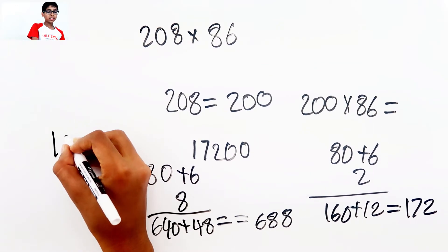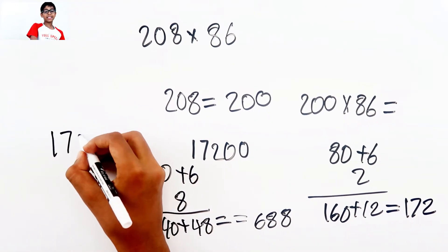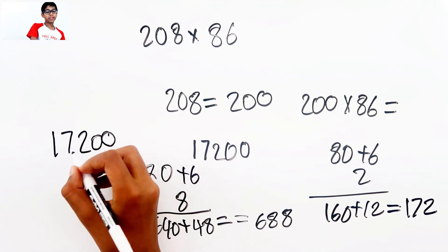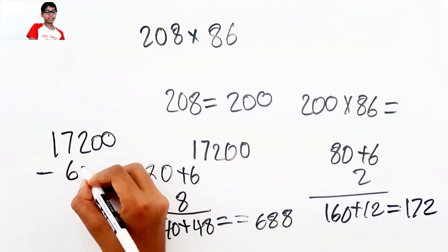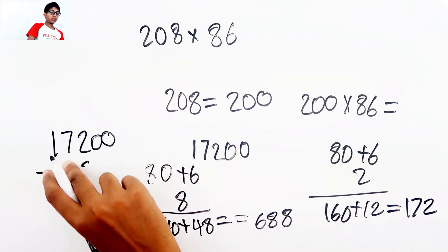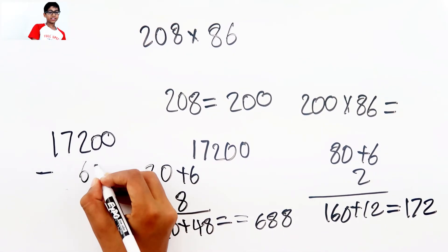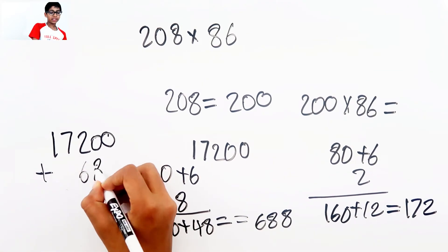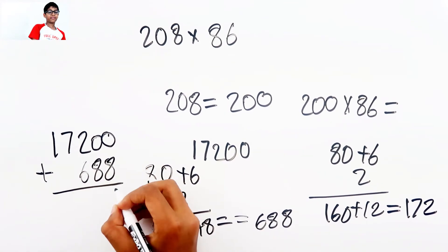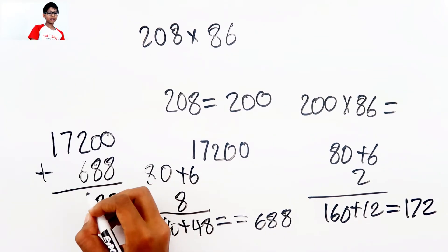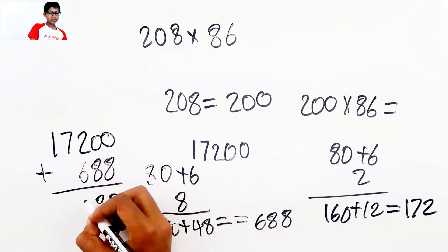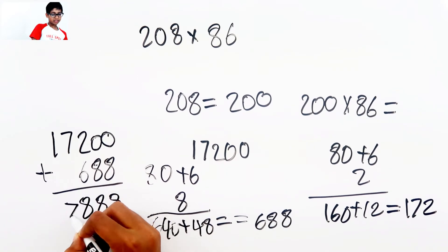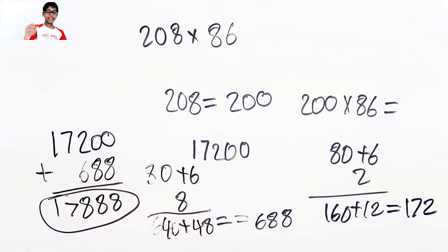Now we need to add. So 17,200 minus, oops, plus 688. So 8 here, 8. So 2 plus 6 is 8, 7, 1. The answer is 17,888.